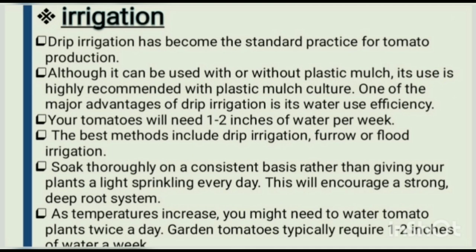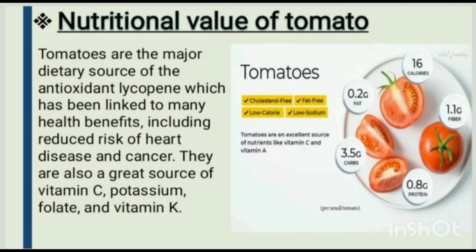Irrigation: drip irrigation has become the standard practice for tomato production, although it can be used with or without plastic mulch. Its use is highly recommended with plastic mulch culture. One of the major advantages of drip irrigation is its water use efficiency. Tomatoes will need one to two inches of water per week. The best methods include drip irrigation, furrow, or flood irrigation. Soak thoroughly on a consistent basis rather than giving plants a light sprinkling every day — this encourages a strong, deep root system. As temperatures increase, you might need to water tomato plants twice a day.